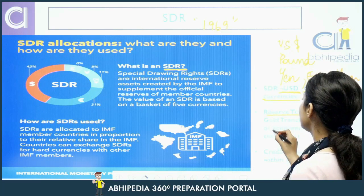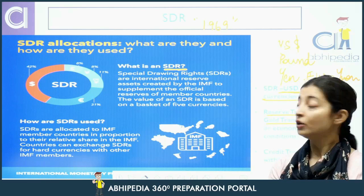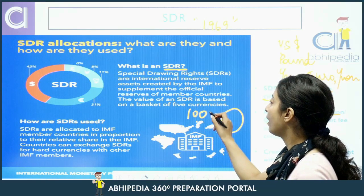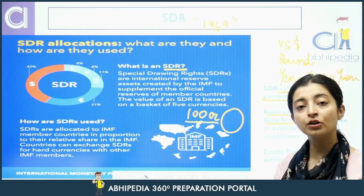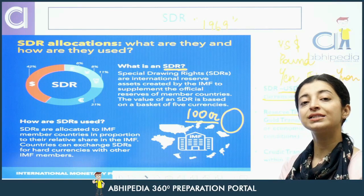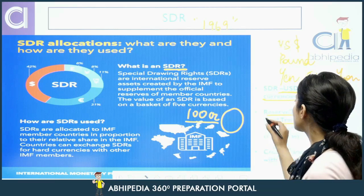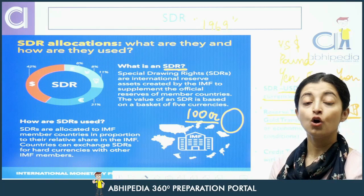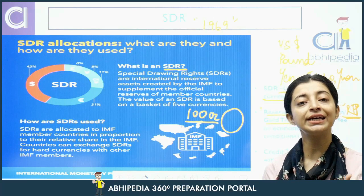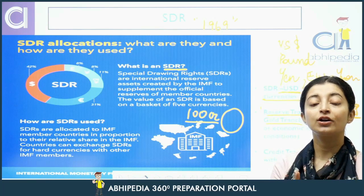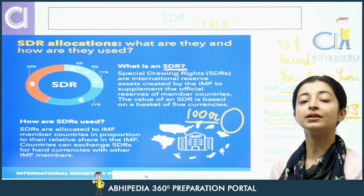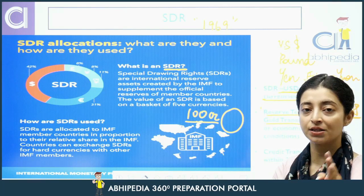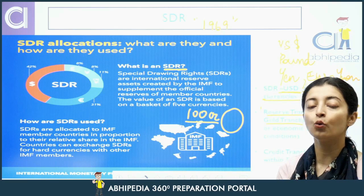Ab hum baat karte hain Reserve Tranche Position ya Gold Tranche ki. Gold Tranche ya Reserve Tranche kya hoti hai? Suppose country ne 100 crores diye as a part of its quota to IMF. Ab un 100 crores mein se kitna aisa amount hai jo ki woh country kisi bhi time in case of a problem le sakti hai — usko hum Reserve Tranche kehte hain, ya RTP (Reserve Tranche Position). Woh jo RTP hai, woh without any extra fees, without any economic reform conditions, country ko mil sakti hai. Country usko use kar sakti hai as first resort facility.